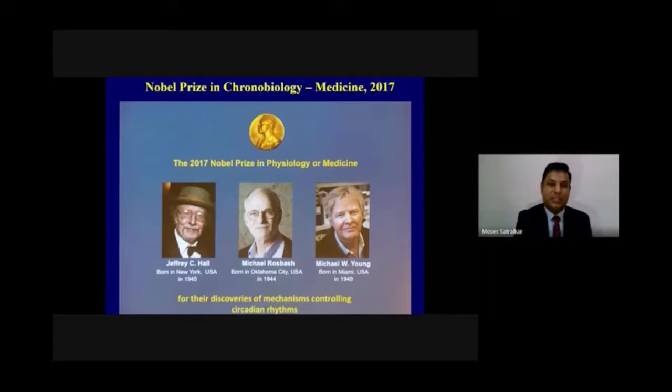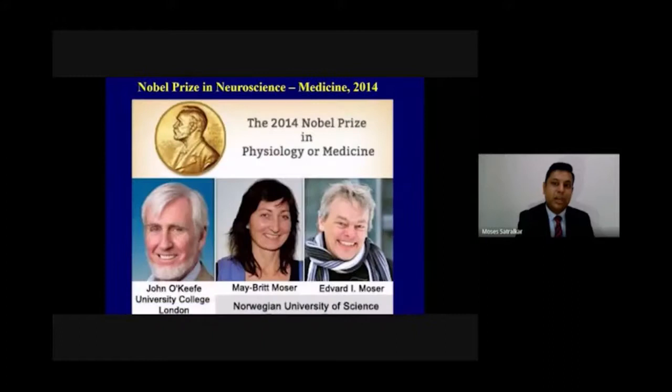It's a very innovative science and the Nobel Prize in chronobiology was won in medicine by the Americans in 2017. Jeffrey Hall, Michael Rosbash, and Michael Young conducted research studies on molecular mechanisms controlling circadian rhythms. Prior to that in 2014, we had the Nobel Prize won by neuroscientists John O'Keefe and May-Britt and Edvard Moser.